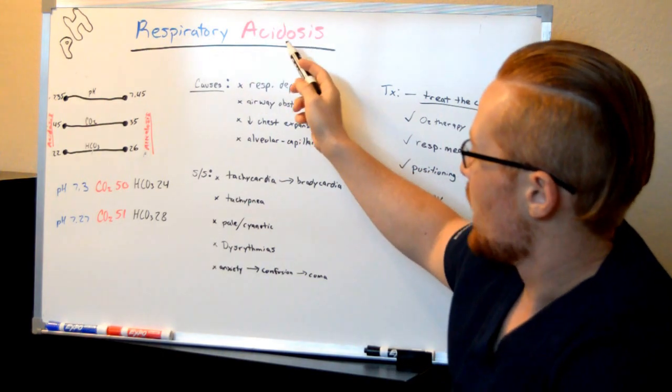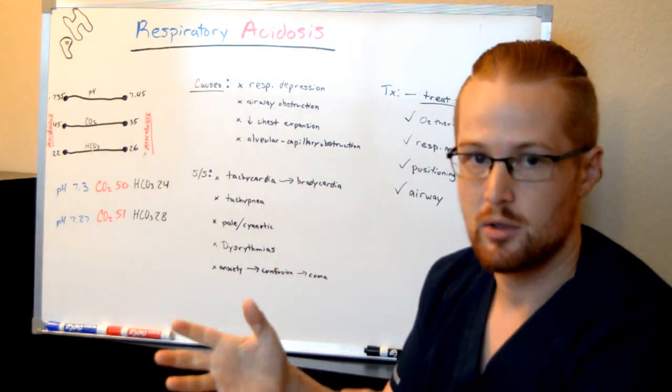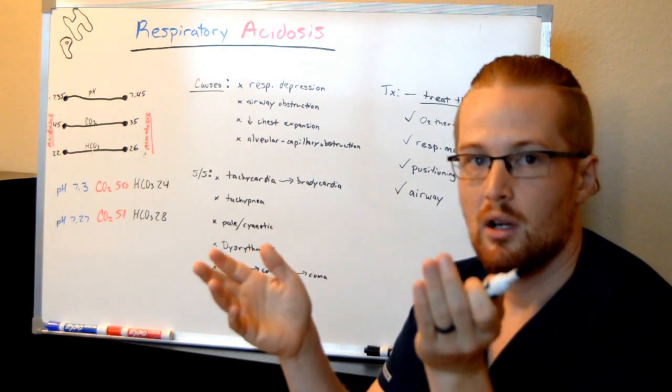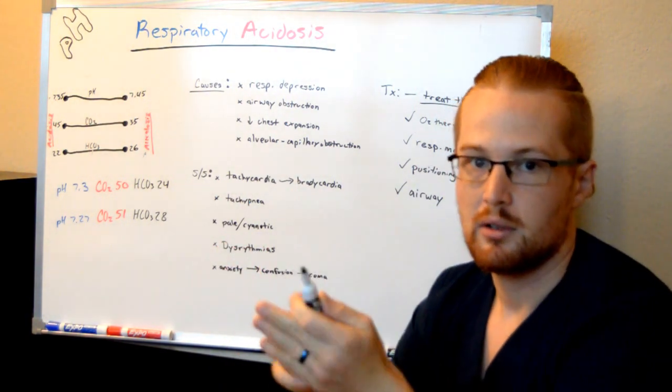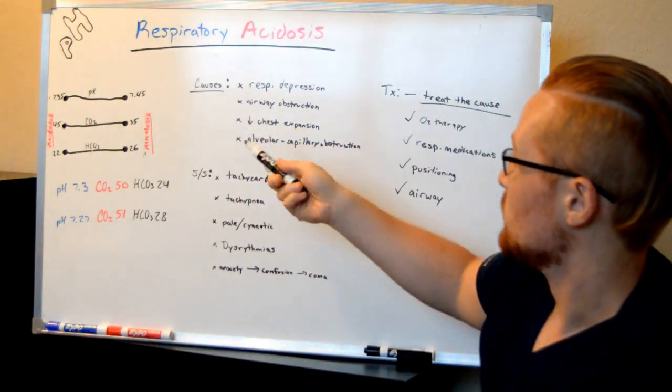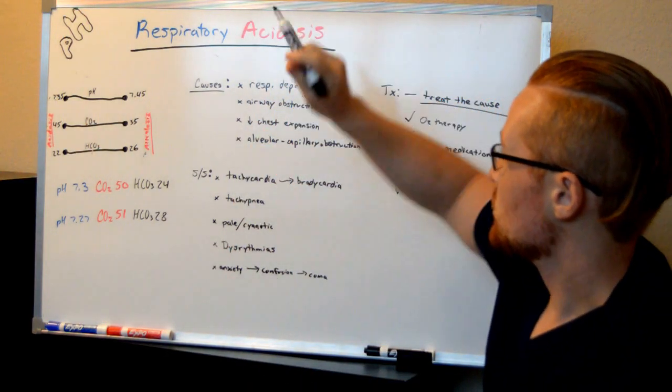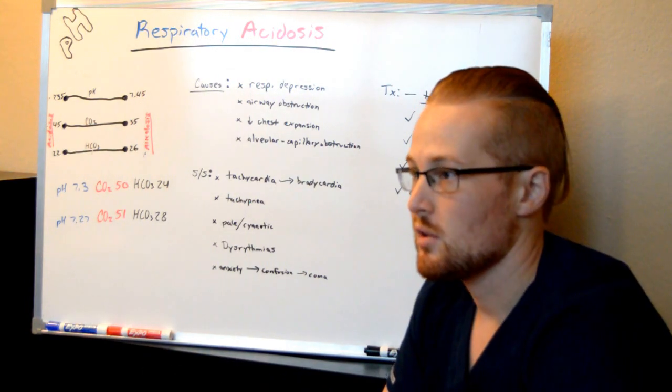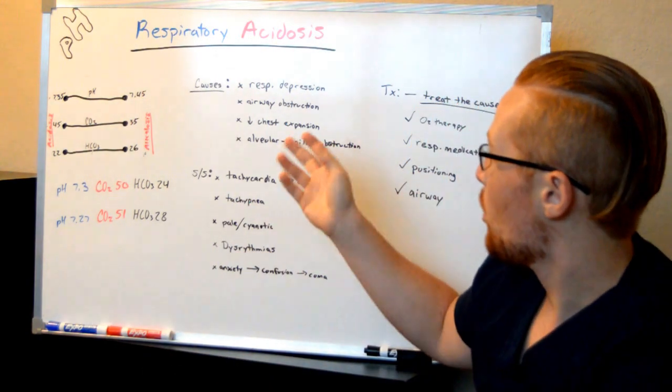So what causes respiratory acidosis? So the patient has a high CO2 level. Well, what's happening is the patient isn't getting adequate breathing and ventilation for a variety of causes. A patient may have respiratory depression, perhaps they overdose on medications, perhaps they have some sort of poisoning.